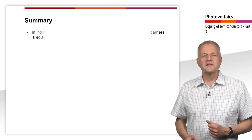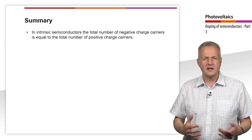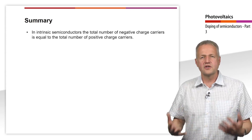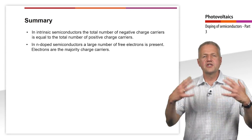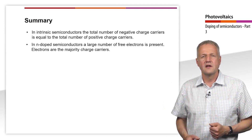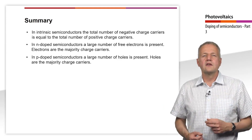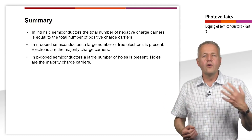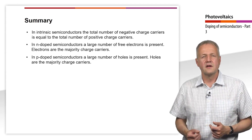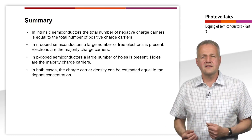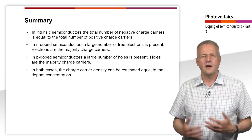We now summarize the teaching unit. In intrinsic semiconductors, the total number of negative charge carriers equals the total number of positive charge carriers. In n-doped semiconductors, a large number of free electrons is present — electrons are the majority charge carriers. In p-doped semiconductors, a large number of holes is present — holes are the majority charge carriers. In both cases, the charge carrier density can be estimated equal to the dopant concentration. Thank you for your attention.